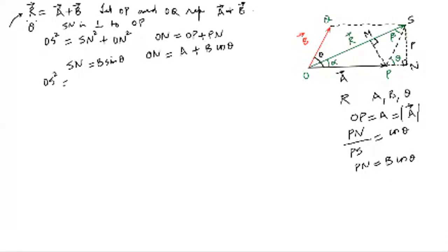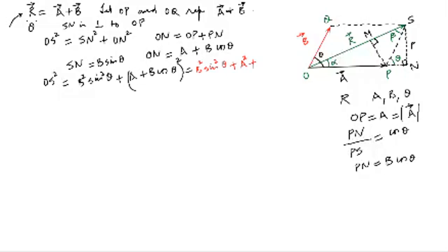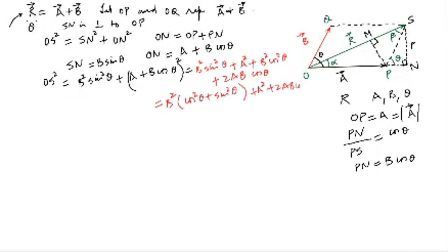So OS squared equals SN squared plus ON squared, which is B sin theta squared plus A plus B cos theta squared. Expanding: B squared sin squared theta plus A squared plus B squared cos squared theta plus 2AB cos theta. Taking B squared as common, sin squared theta plus cos squared theta equals 1, giving us A squared plus B squared plus 2AB cos theta.